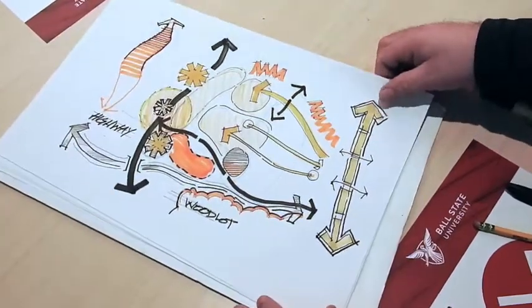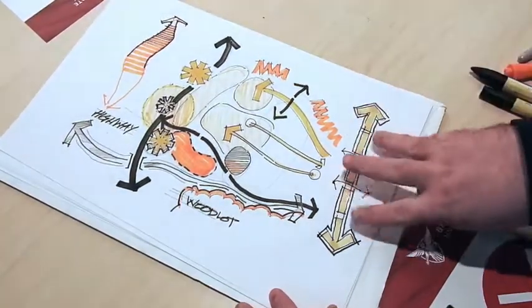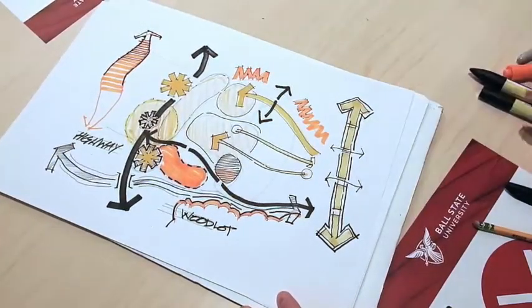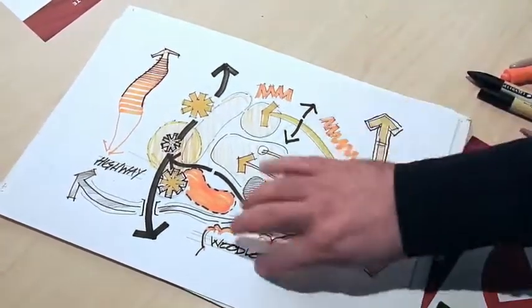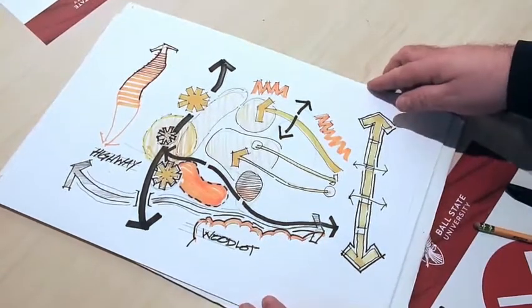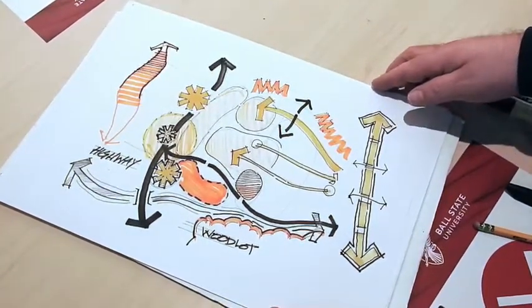So those are the shapes, symbols, techniques, practices that can come together with line weight, a little bit of color, a little bit of technique, a little bit of lettering to make diagrams communicate well.